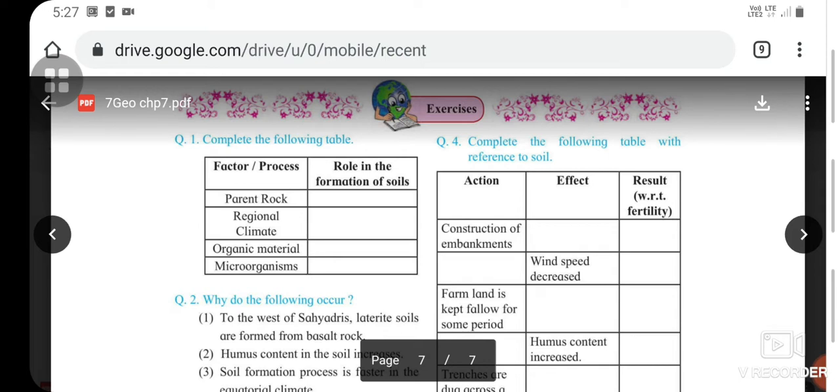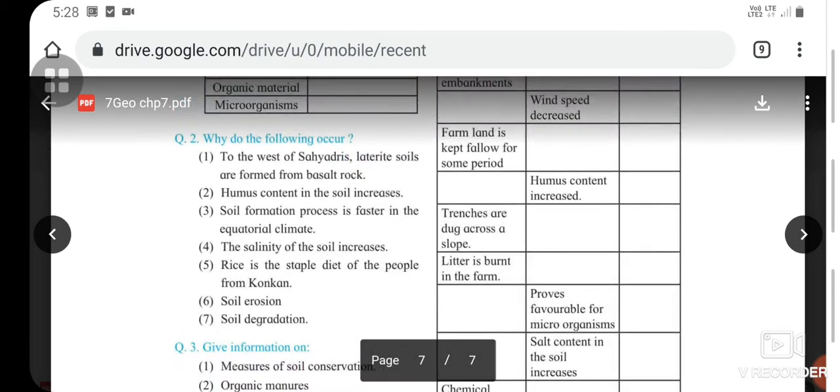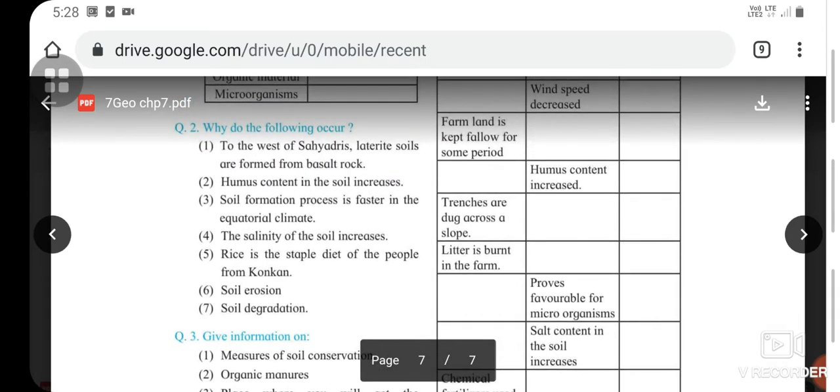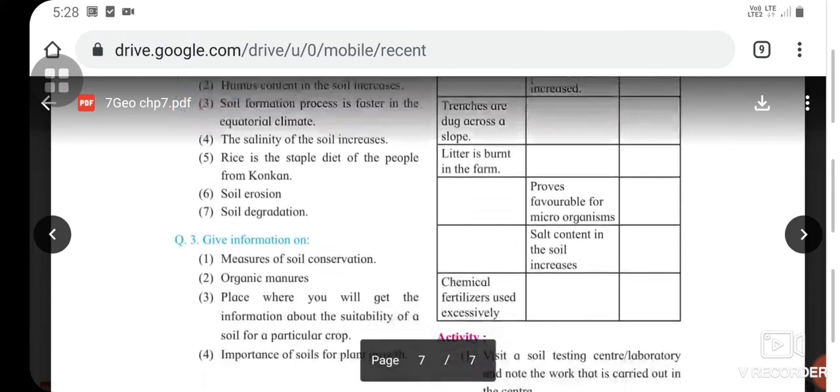Next, you have to give the reasons for the following occurrences: First, to the west of Sahyadris laterite soils are formed from basalt rock. Second is about humus content in soil increasing. Third, soil formation processes faster in equatorial climate. Fourth, salinity of soil increases. Fifth, rice is the staple diet of people from Konkan. Sixth is soil erosion. And seventh is soil degradation. You have to write the reason for the occurrence of these.